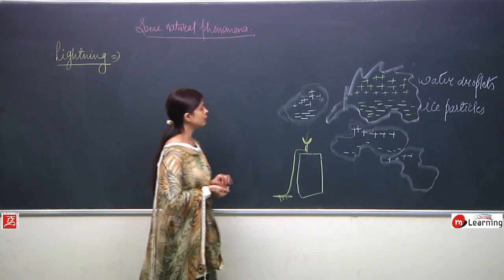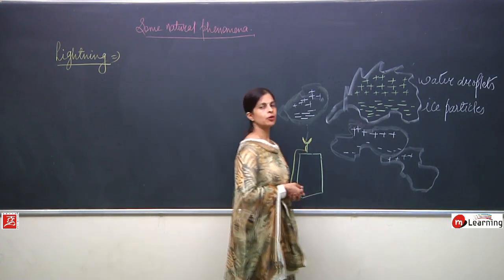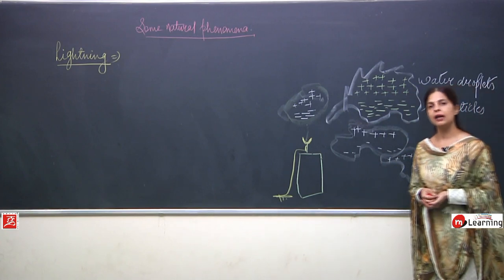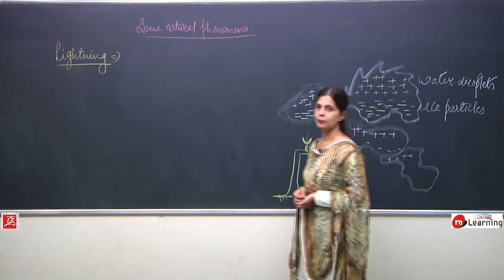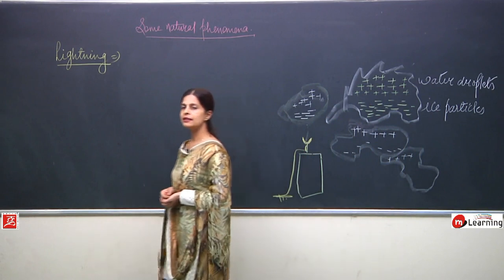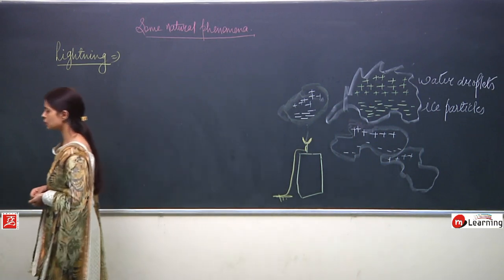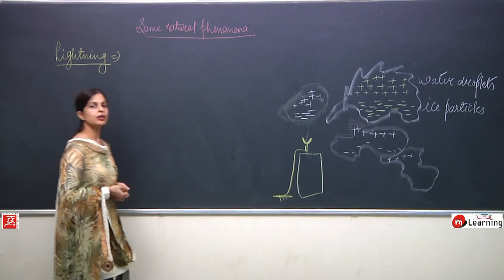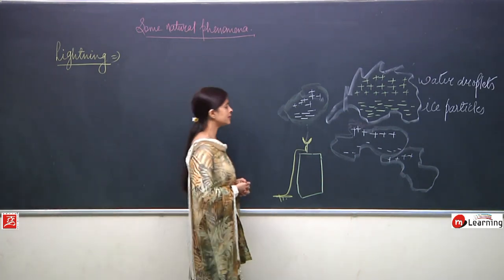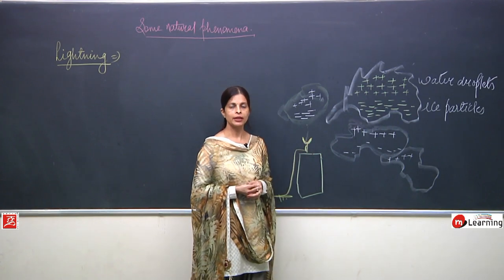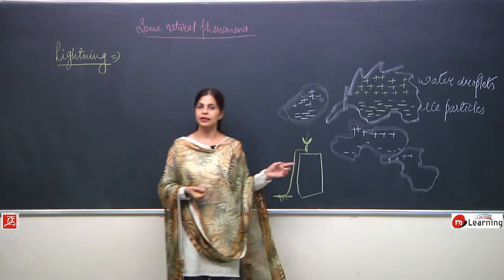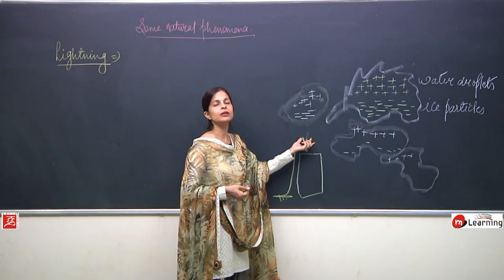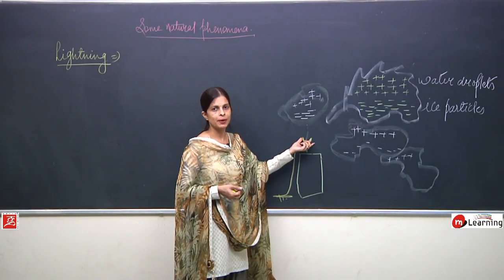A lightning conductor is an instrument or device which prevents tall buildings and tall towers from lightning. It has sharp, forked edges at the top and a metal — copper — strip attached. One wire is then attached and buried inside the earth, a little distance away from the building.